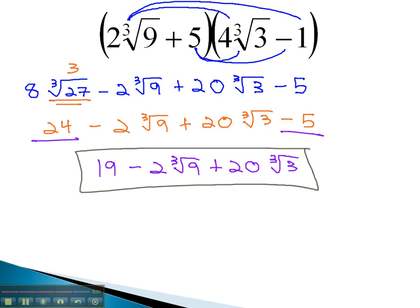Just as with normal variables and numbers, we can foil with radicals, making sure our final answer is always reduced.